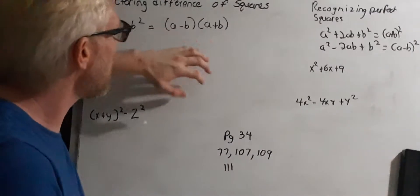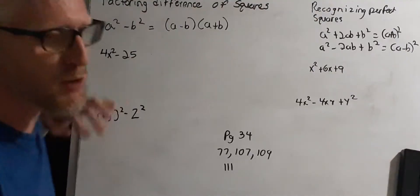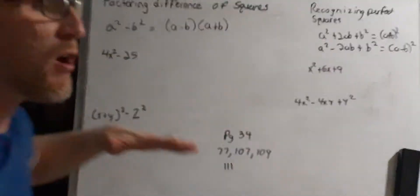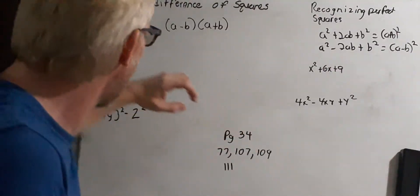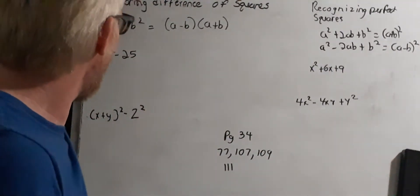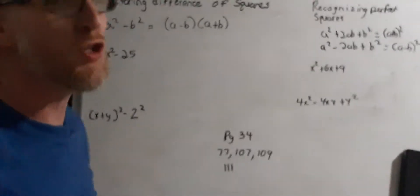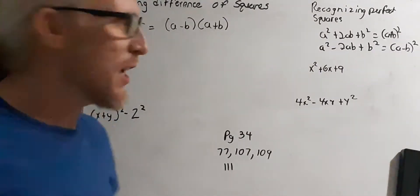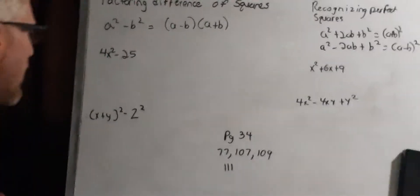The first thing we're going to talk about is factoring differences of squares. Differences of squares is given by the formula: a squared minus b squared equals a minus b times a plus b. In these two examples we already have them in the form a squared minus b squared — we just want to factor them, turning them into the a minus b times a plus b form.